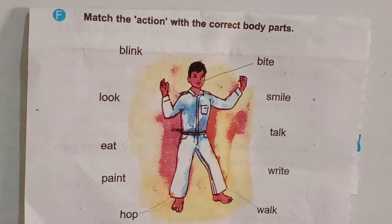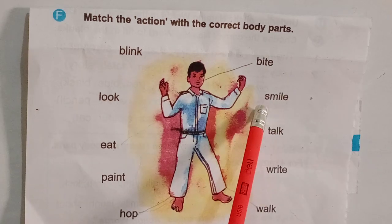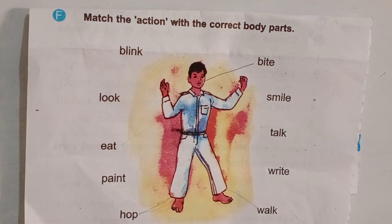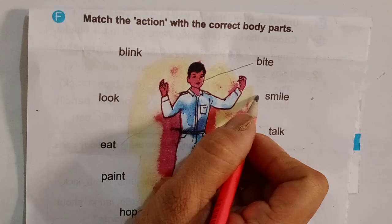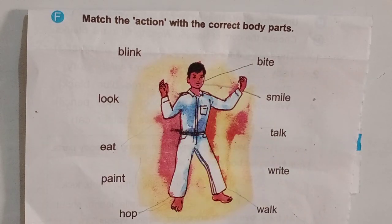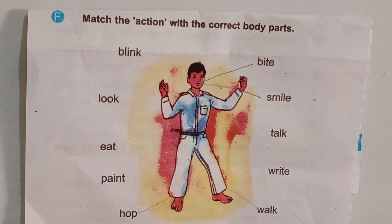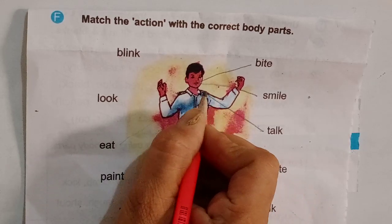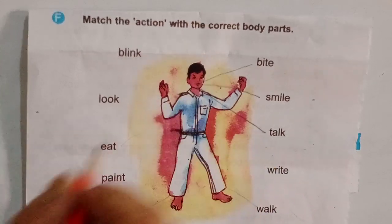We take a bite with our mouth. Here is the mouth. The next word is smile. How can we smile? From which part of the body can we smile? We can smile with our mouth, or you can say with our lips. How can we talk? We talk with our tongue or with our mouth. So, we will match the word talk to the mouth.